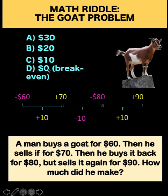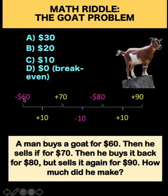Why are some people answering break-even? Their reasoning is: you buy it, you sell it, you buy it, you sell it — and in all those transactions there is the same profit and loss. So they think after all these transactions nothing is gained and nothing is lost. Although some people also ask about paying tax, food for the goat, and other expenses that come with owning the goat — but in this riddle we disregard all those other details. We just focus on the amount spent and the amount received from all the transactions.